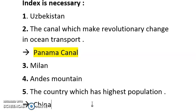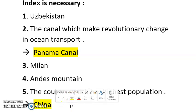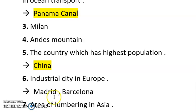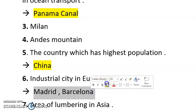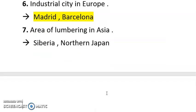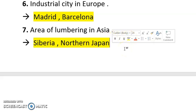Next is Milan, and then Andes mountain. The next question is which country has the highest population — the answer is China. If the question asks which country is second highest, that would be India. Next is industrial city in Europe — Europe is very large, so you need to tell which city is most developed in terms of industries. Next is area of lumbering in Asia. Lumbering is carried out in coniferous forests where trees are cut down in large amounts for commercial use — export, import, construction, and furniture. The answer is Siberia and Northern Japan.